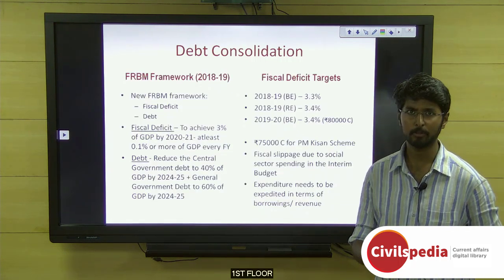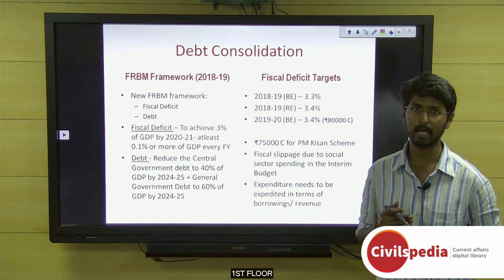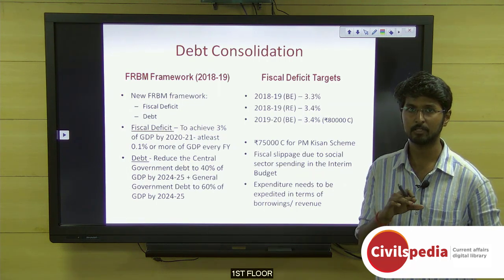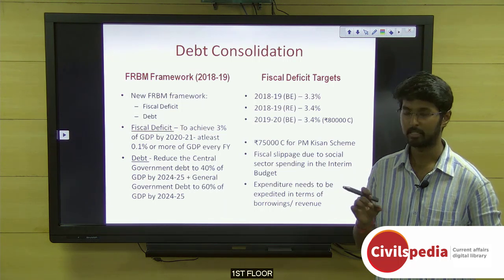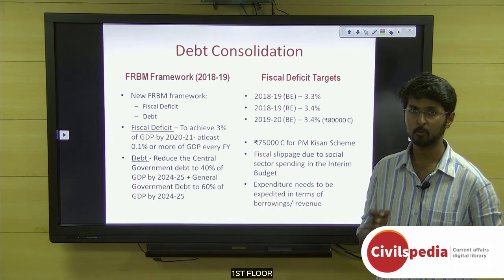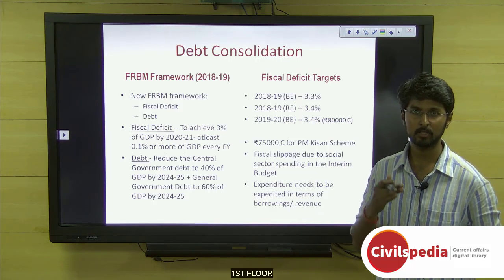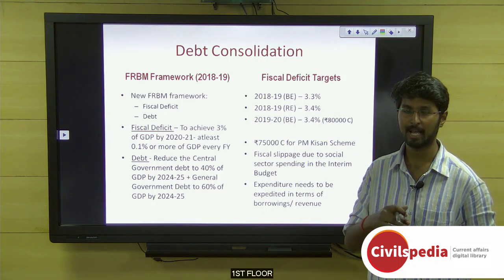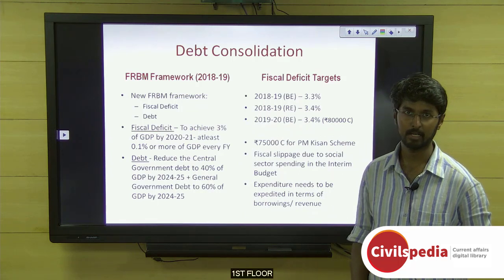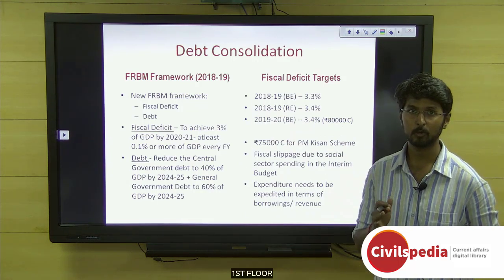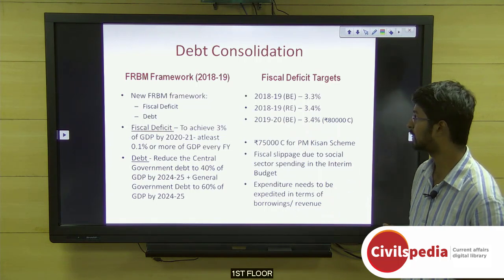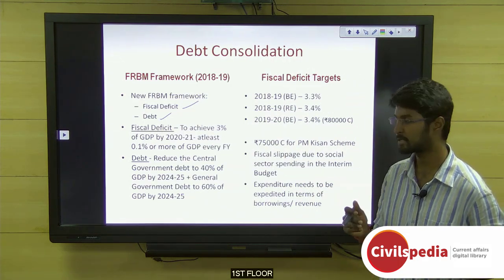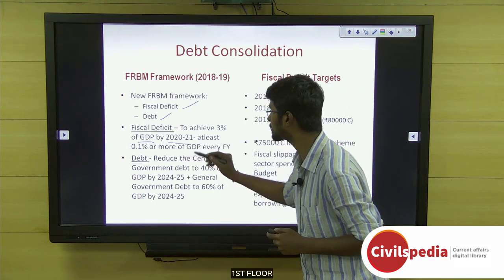Regarding the new FRBM framework: when the FRBM Act was introduced in 2003, they targeted reducing fiscal deficit to 3% by 2008-09 and revenue deficit to 0. The latest amendment to this framework in 2018-19 discusses fiscal deficit and debt. On the fiscal deficit component, it aims to achieve 3% of GDP fiscal deficit by the year 2020-21.